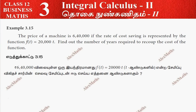Hi students, this is Alex here. Example 3.15. The price of the machine is 6,40,000. The rate of cost saving is represented by one function f of t equal to 20,000t.